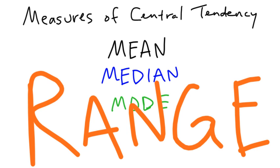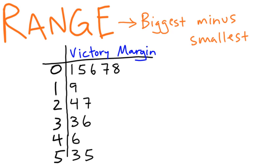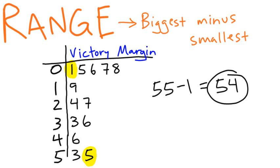And one left: range. Range is pretty simple — it's just the biggest minus the smallest. So if we look at that same data, what's the biggest? The biggest is 55. Smallest is 1 — we only won one game by one point. And the range is obviously 54.